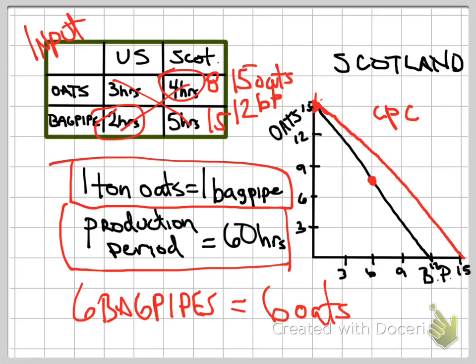What that shows us is that, as a result of trade, having given up six oats, Scotland would be at a point of nine tons of oats remaining, and in return they're also getting six bagpipes. My CPC was a little bit off, but we have a new point of trade — as a result of trade with the United States — that is beyond the original PPC of Scotland, and yet is a reflection of the benefits of trade.